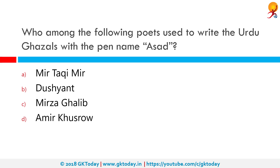Who among the following poets used to write Urdu ghazals with the pen name Asad? This poet's original name is Mirza Asadullah Baig Khan, but most of us know him by the pen name Ghalib. Before he was Ghalib, he wrote under the pen name Asad, which means a lion. He was honored with the title Dabir-ul-Mulk by Bahadur Shah Zafar. When the title Mirza Nosha was given to him, he became known as Mirza Ghalib. The correct answer is option C: Mirza Ghalib.